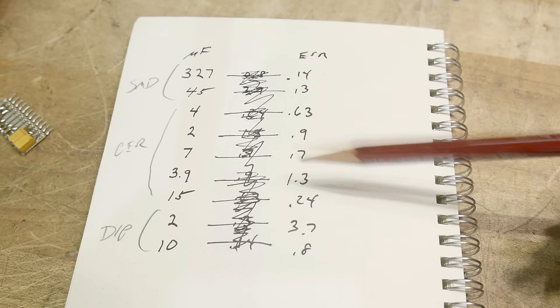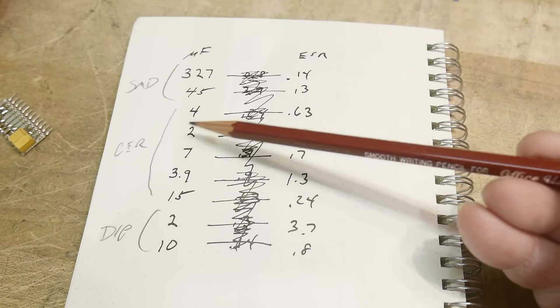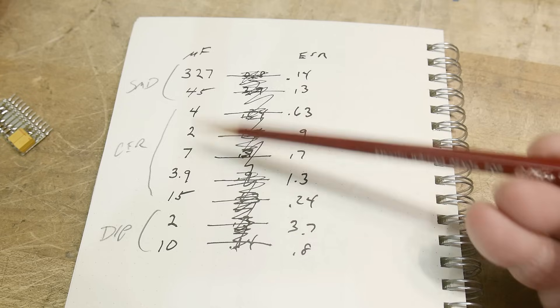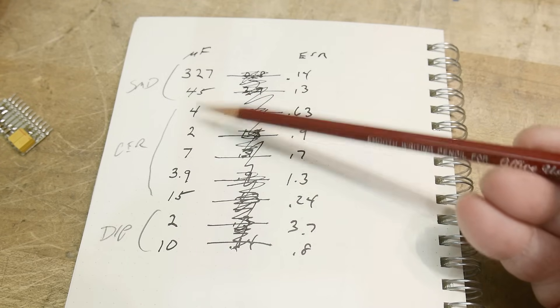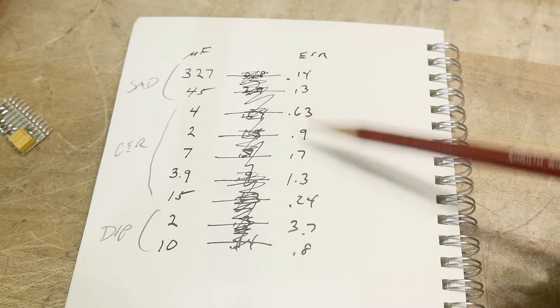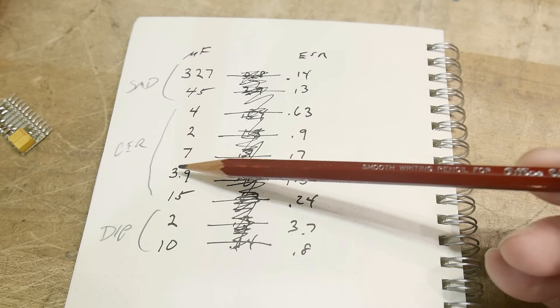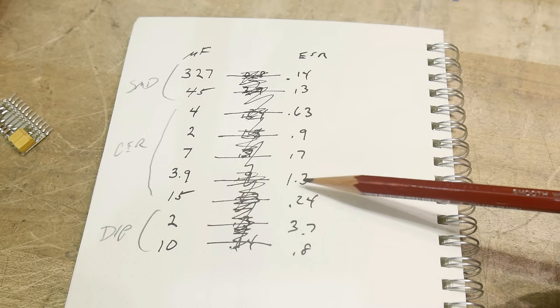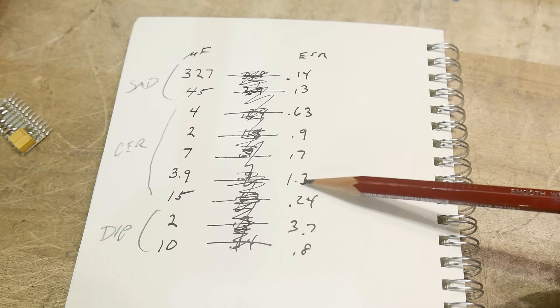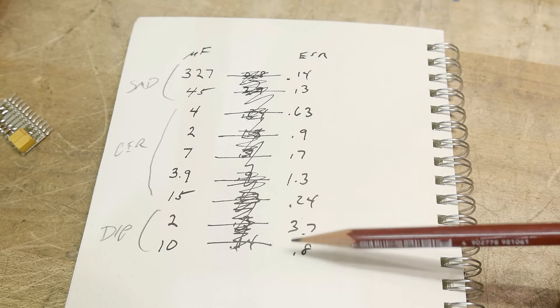But in general, look at the ceramics. They go from 15 microfarads, 7, 4, 4, 2, and they're all an ohm or better, right? Here's a little 3.9 gave us 1.3 ohms, but they're all better than these dipped tantalums.